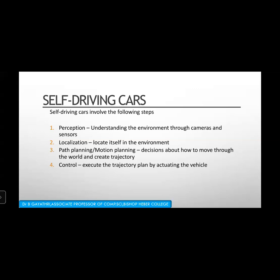The final step is control — execute the trajectory plan by activating the vehicle. We have planned the trajectory, and now we activate the vehicle according to that plan. So the steps for self-driving cars are: perceive, localize, plan the path, and then control.